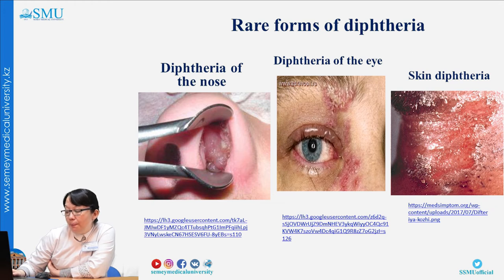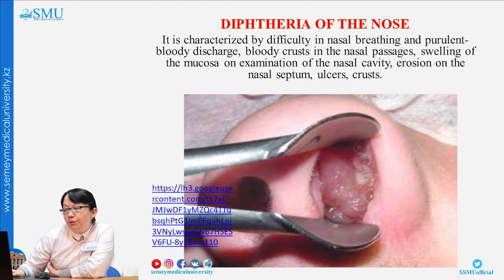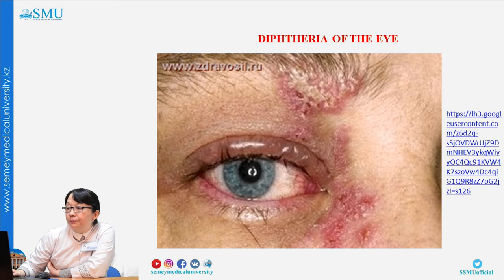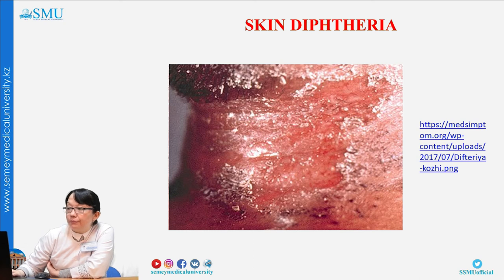Rare forms of diphtheria include diphtheria of the nose, eye, and skin. In nasal diphtheria, pseudomembranes are seen on the nasal mucosa with swelling. In diphtheria of the eye, pseudomembranes appear on the sclera and conjunctiva — white or gray, difficult to remove, leaving bleeding on removal. Skin diphtheria is localized in skin folds, on the neck, behind the auricle, and other locations.